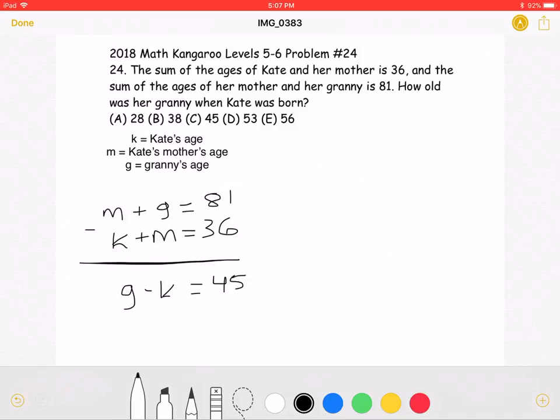That means that when Kate was born, her grandmother must have been 45 years old because the difference between their ages is 45.